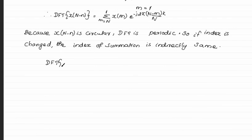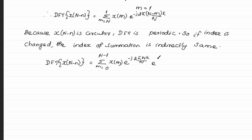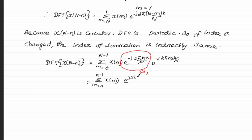In the next step, we take the summation from 0 to N minus 1 instead, and we split the e-power term into two terms. We know that integer-multiple powers of the complex exponential are equal to 1, so the first e-power term changes to 1.